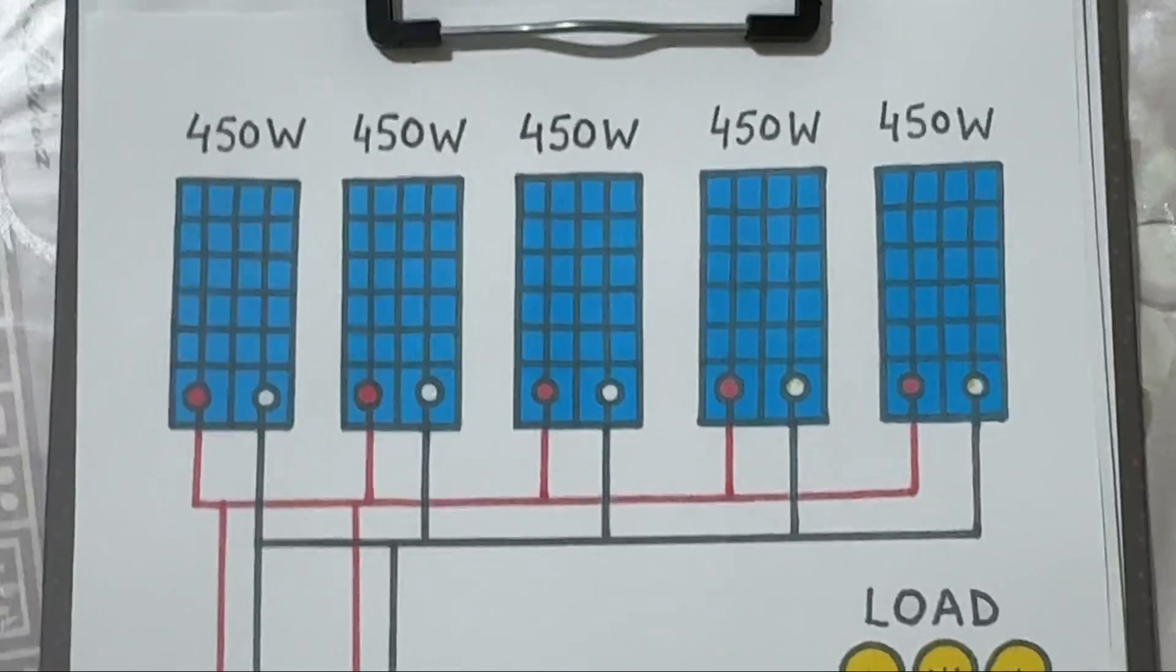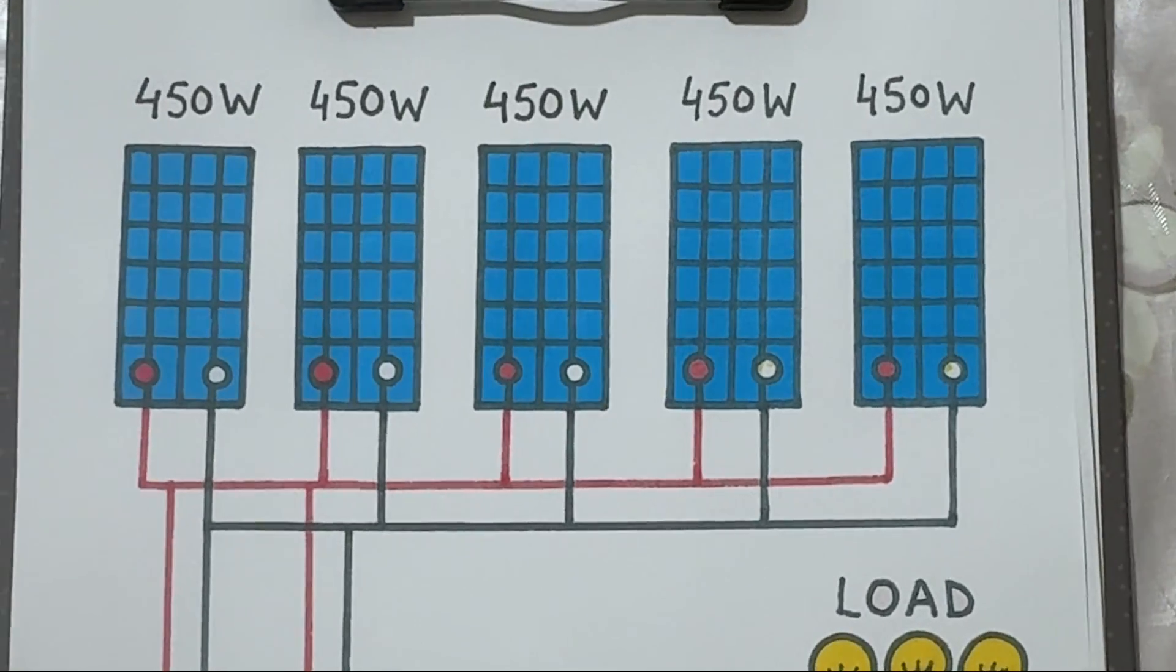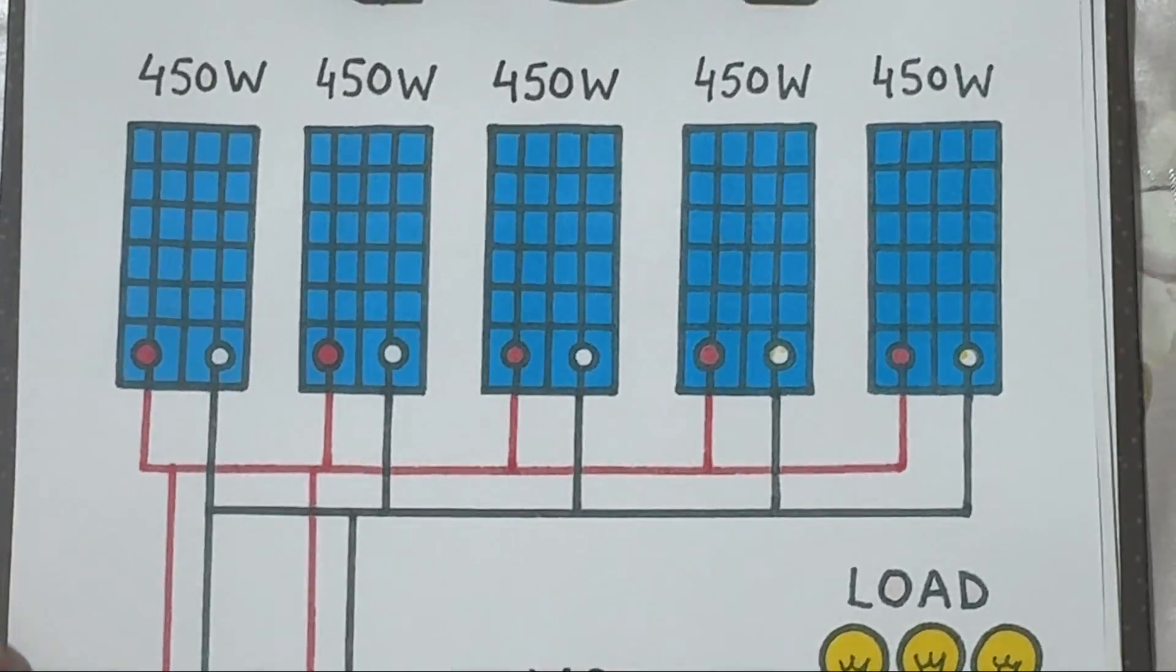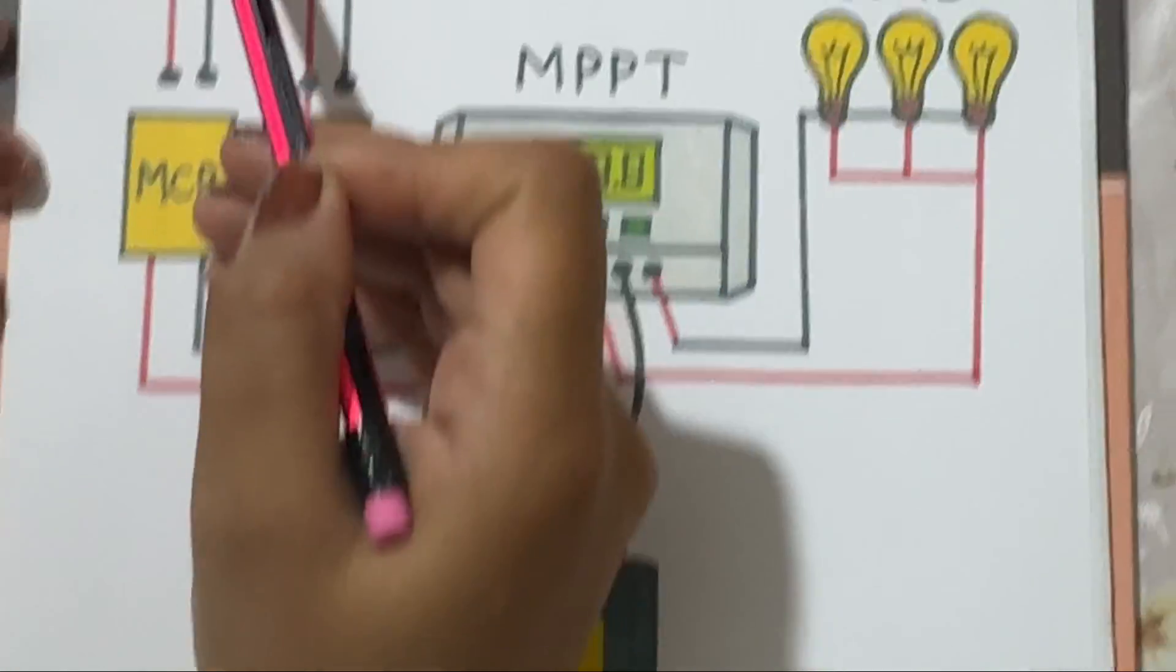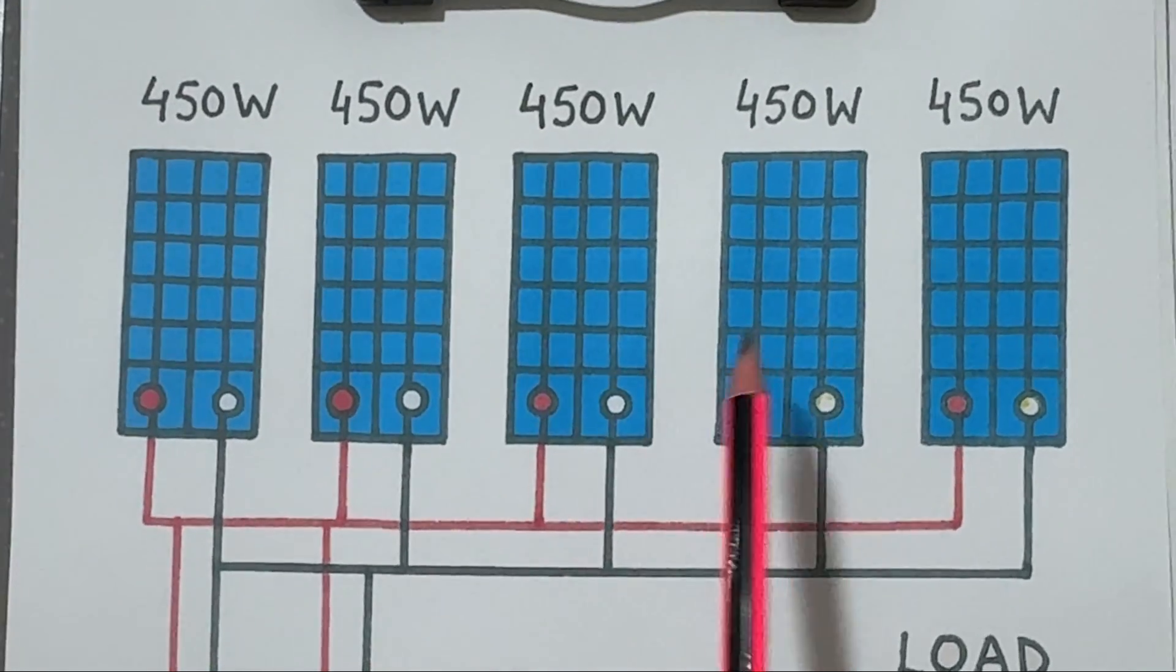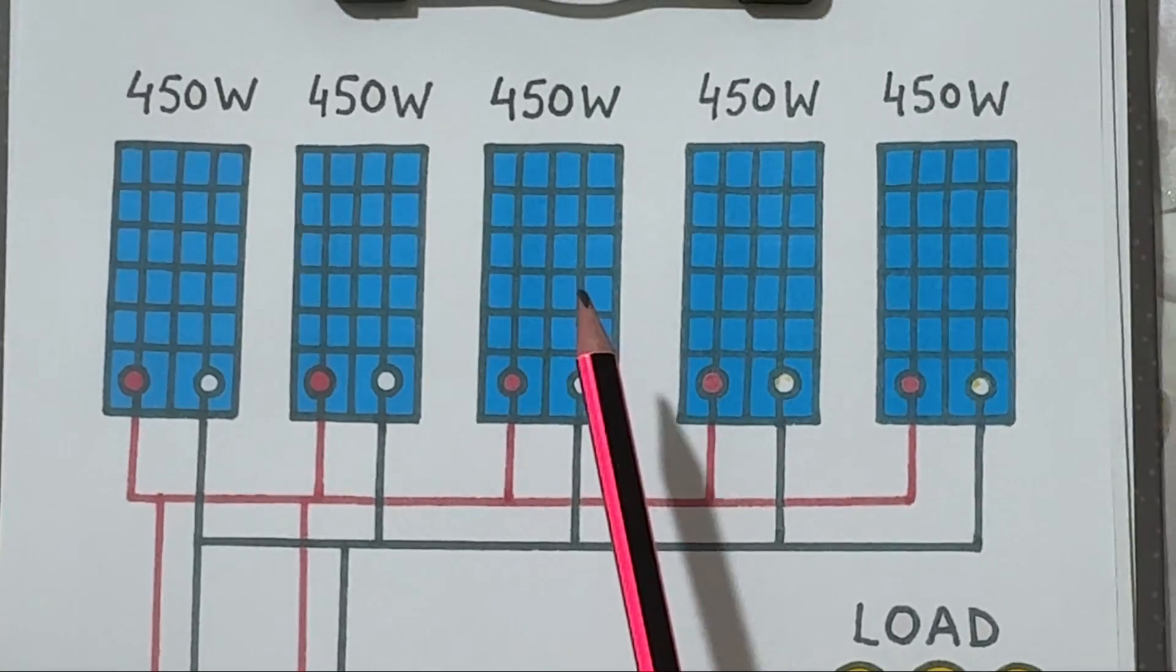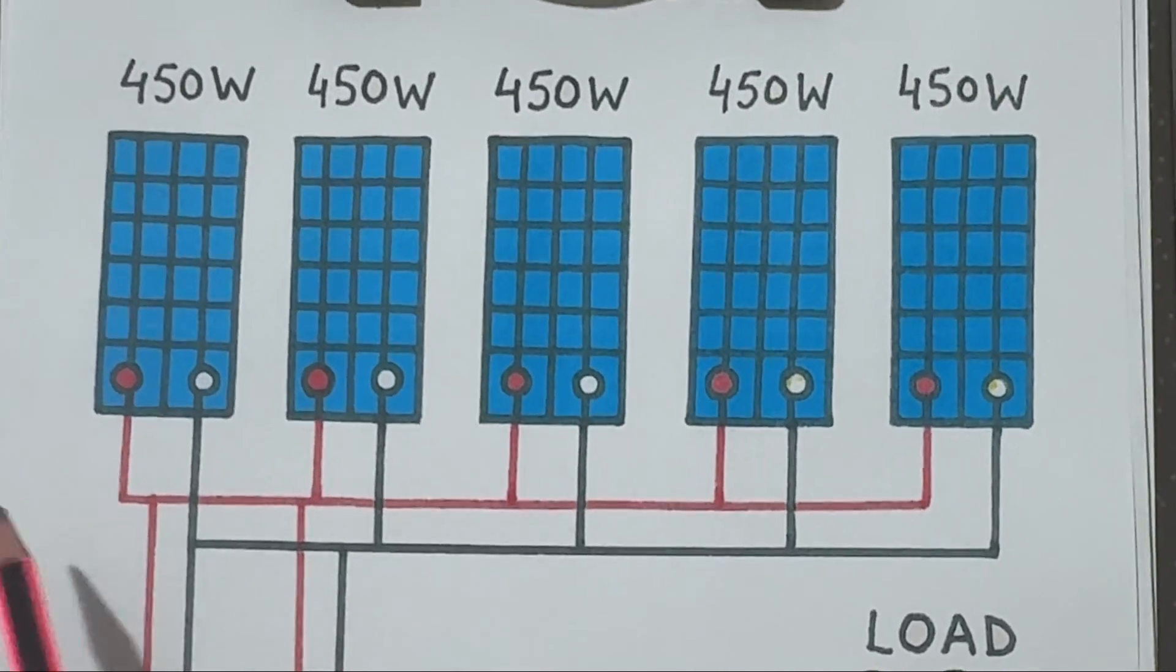Hi everyone, in this video we are going to understand how a solar power system works step by step using this simple diagram. At the top you can see five solar panels rated at 450 watts. These panels are connected in parallel.